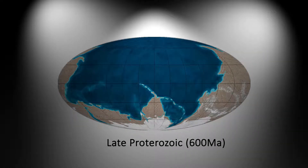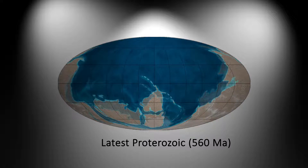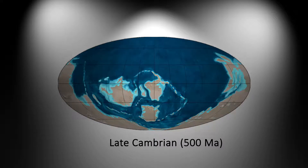Here we can see the changes in the positions of the Earth's plates through the years, starting with Late Proterozoic, 600 million years ago; Latest Proterozoic, 560 million years ago; Early Cambrian, 540 million years ago; and Late Cambrian, 500 million years ago.